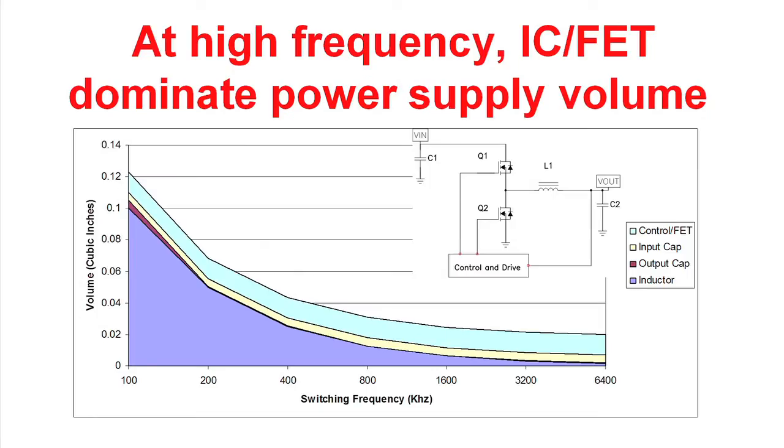As shown in this chart, the operating frequency impacts the size of the power supply. What we have here is a typical buck regulator. We're showing input filter capacitor, power switches, control and drive circuits, and then the output filter made of the output inductor and the output filter capacitor.